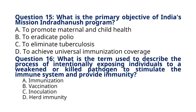Question 16. What is the term used to describe the process of intentionally exposing individuals to a weakened or killed pathogen to stimulate the immune system and provide immunity? A. Immunization. B. Vaccination. C. Inoculation. D. Herd immunity. The correct answer to question 16 is option B, vaccination. Vaccination refers to the process of administering vaccines to individuals to stimulate their immune system and provide immunity against specific diseases.